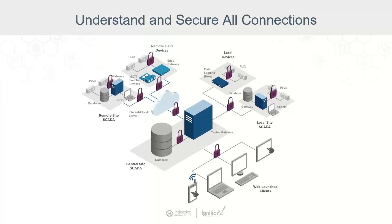We all know that a lot of PLCs are known to have insecure connections. For example, if I had a Modbus device, it's over port 502. If I knew the IP address and I was on that network, I can go sniff and find those devices and read and write. I don't need a username and password — there's no encrypted connection. So we need to understand how this all works because that affects how we set up firewalls and our network to protect it.